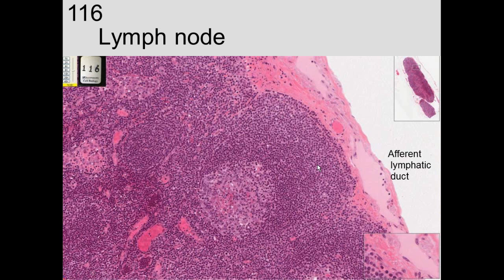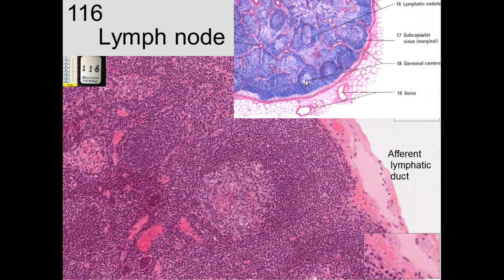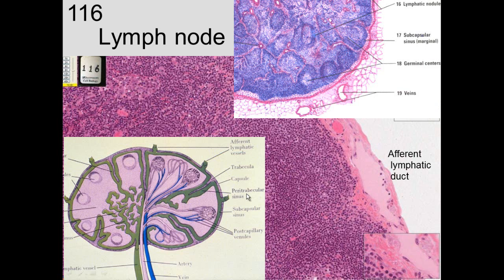On the outside, afferent lymphatic ducts bring lymph into the lymph node from all different locations around it. You can see a valve in these ducts and follicles with germinal centers — the light areas within the follicle. The afferent lymphatics drain fluid from various tissues; it flows down through the subcapsular sinus and then exits through the hilus region.